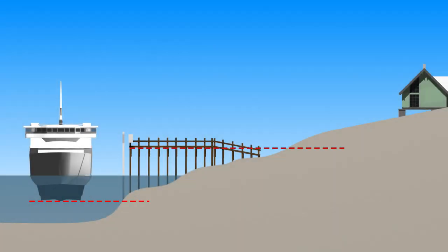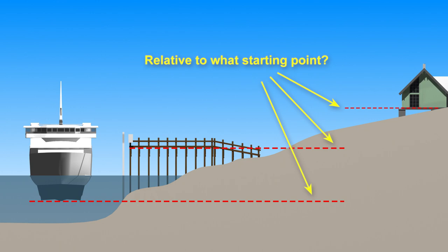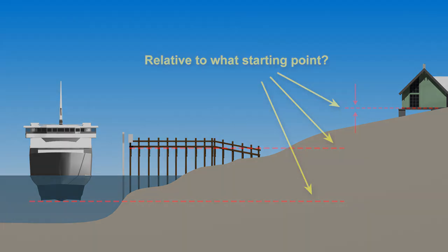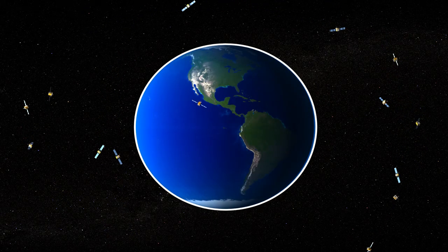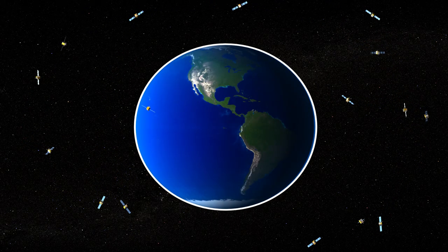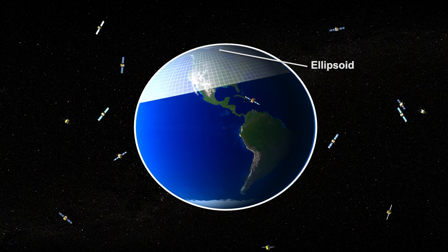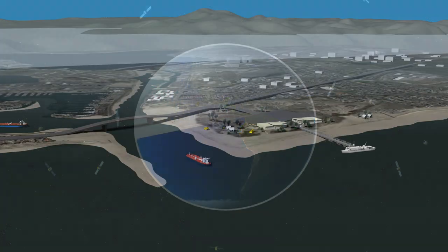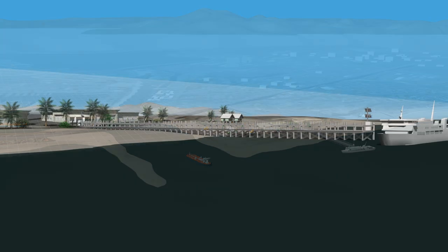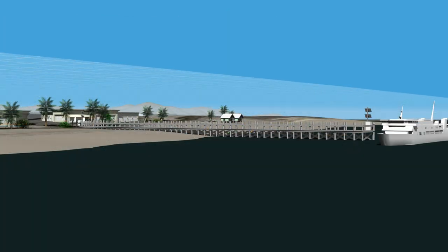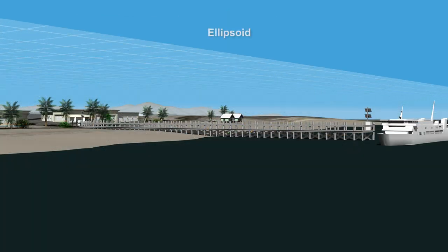In order to align elevation data from various sources, we need to pick a common starting point. The most commonly used reference surface, or datum, is an ellipsoid, an idealized representation of Earth's shape. Because Earth is not smooth, the ellipsoid may lie above or below Earth's surface at any given location. The ellipsoid is the basis for satellite navigation systems, such as the U.S. Global Positioning System, or GPS.